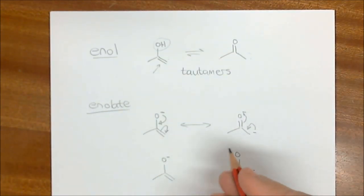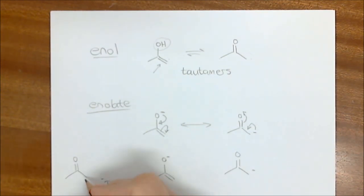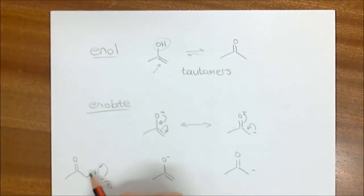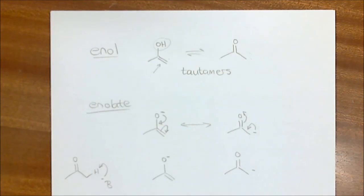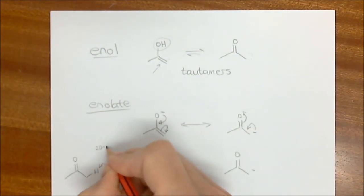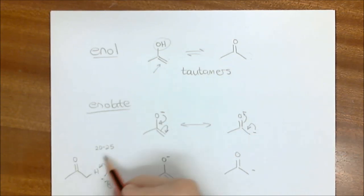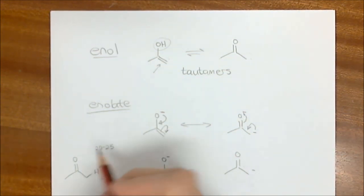How does an enolate form? This one would arise from acetone when we add a base. What happens is the base picks up a proton. This proton has been made acidic because when we remove it, the negative charge that forms on that carbon can resonate into the carbonyl. The pKa of protons next to ketones is in the region of about 20 to 25 — that's the range for pKa's next to carbonyl compounds, next to a ketone closer to 25.